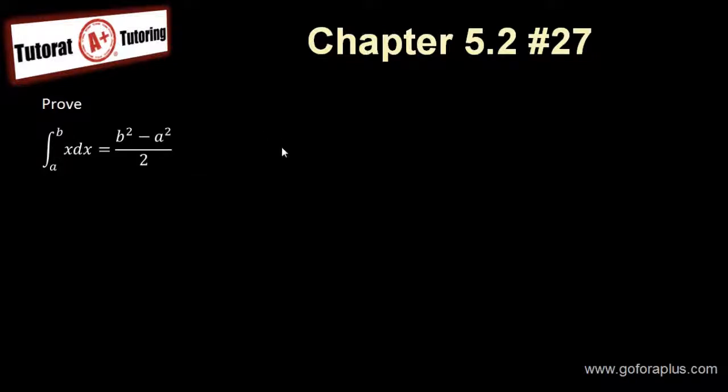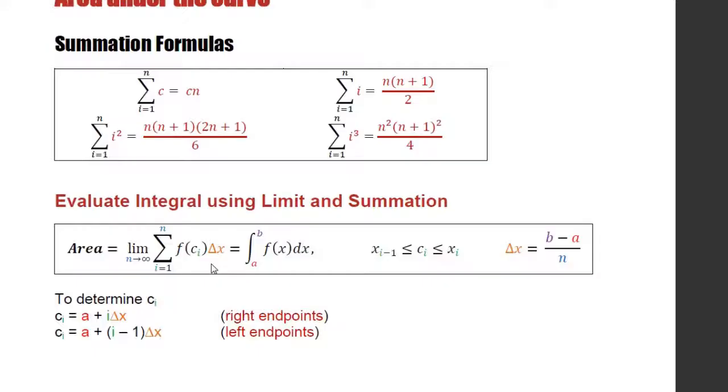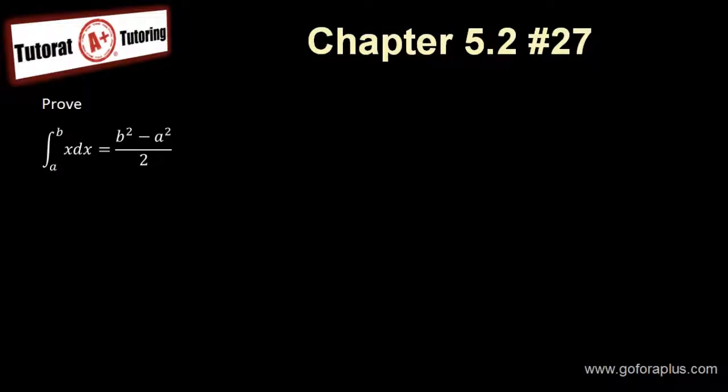In question 27, it says to prove that this integral is equal to b squared minus a squared over 2. Obviously, in this chapter we are not going to use the fundamental theorem of calculus. We're going to use this equation right here. Area equals to this part, right? So I have to use the limit definition again here, using the right-hand point.